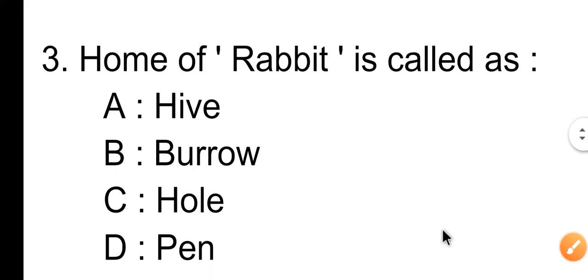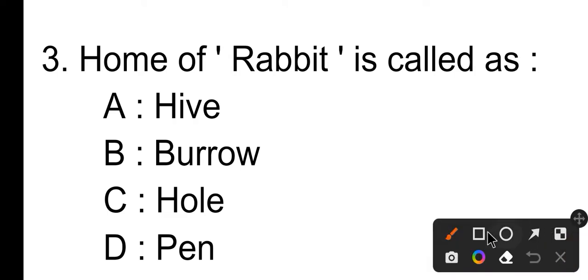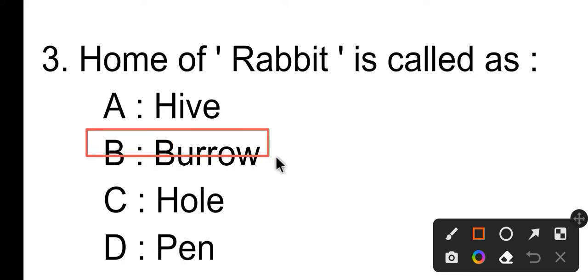Question number three: the home of rabbit is called as — Option A is hip, Option B is burrow, Option C is hole, Option D is pen. The answer is burrow.